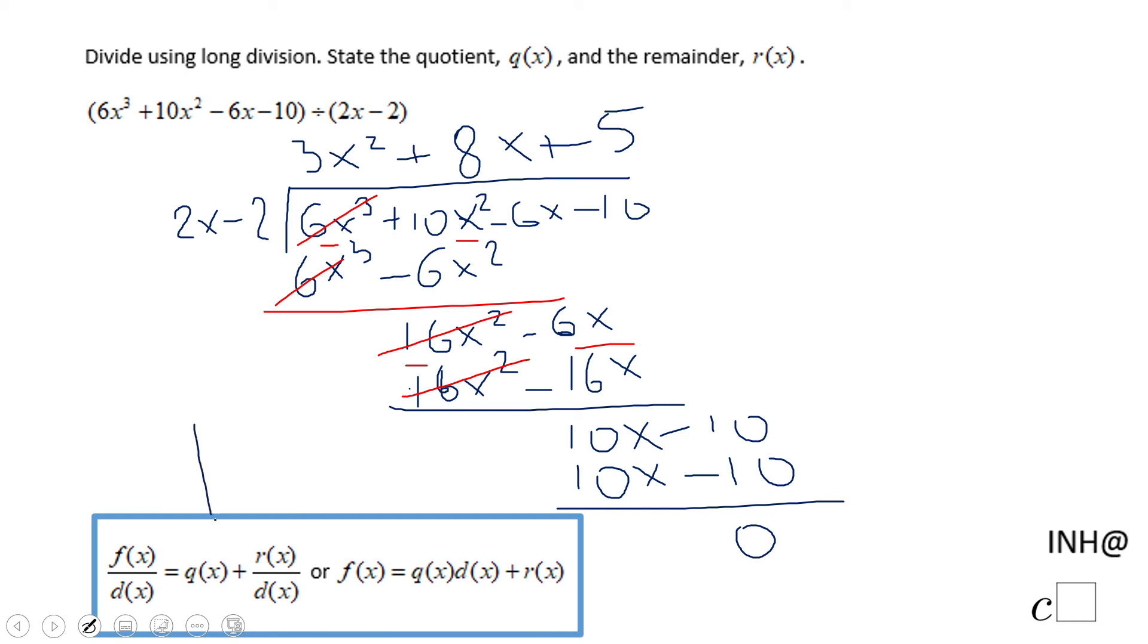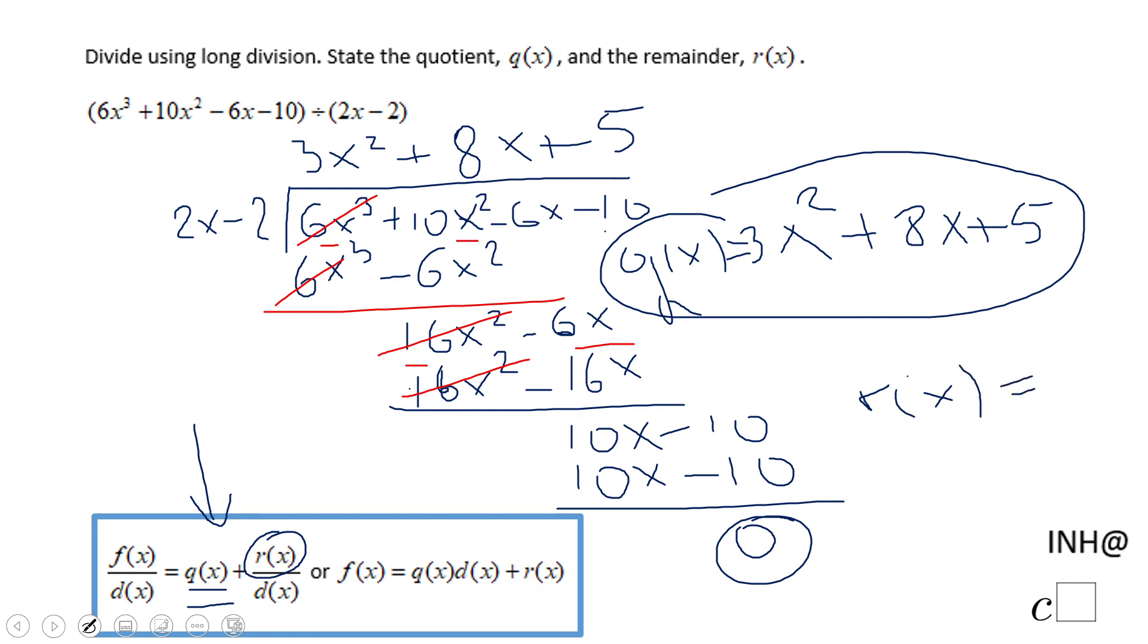So now our answer is 3x² plus 8x plus 5. This is q(x). And r(x) is the remainder, which in this case is 0.